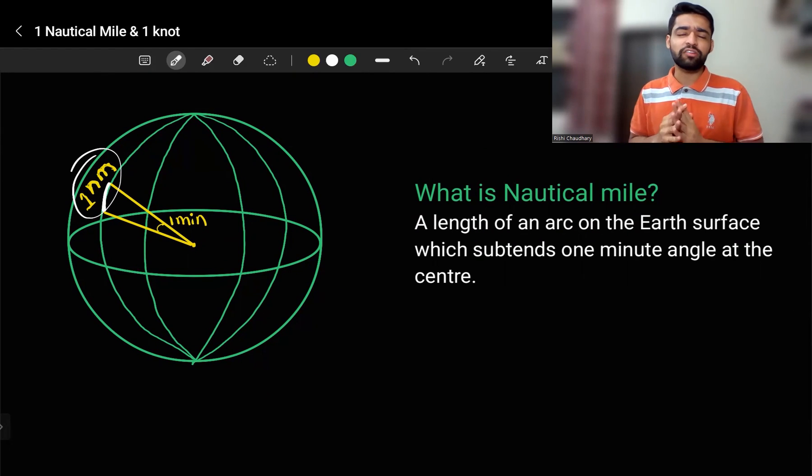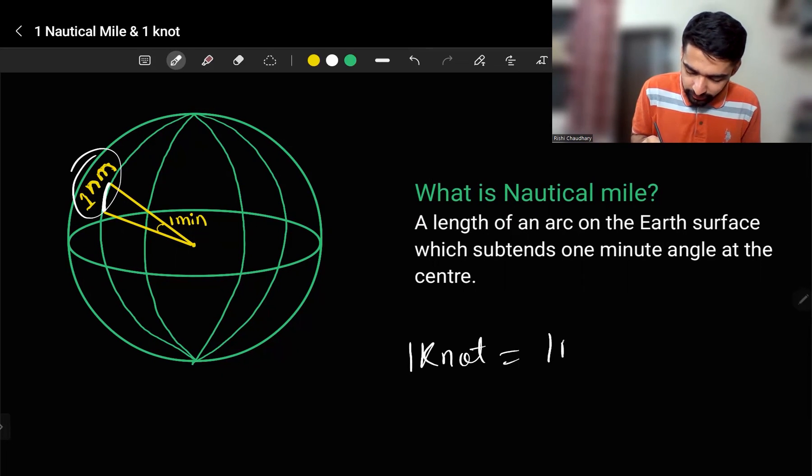Now that we have learned about what is nautical mile, we should also learn about what is a knot. So 1 knot is nothing but 1 nautical mile per hour.